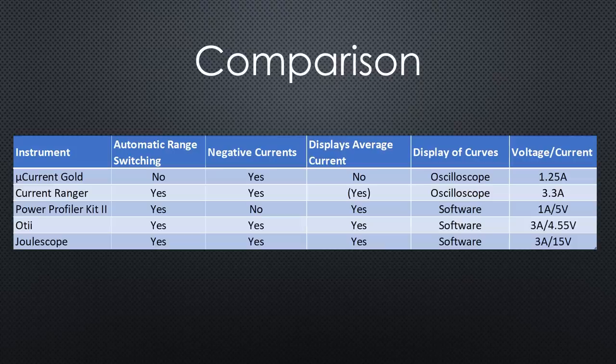Because both of them come without software support, you have to do your calculations or use the math functions of your oscilloscope, which is not everybody's darling. So, the clear winner in the $100 range is the Power Profiler Kit 2.